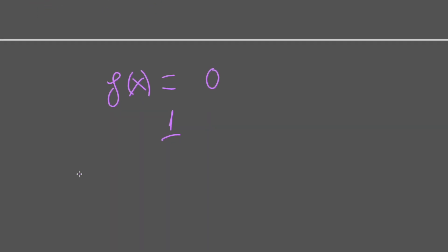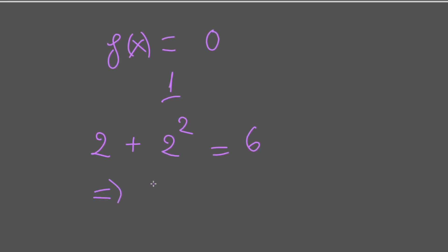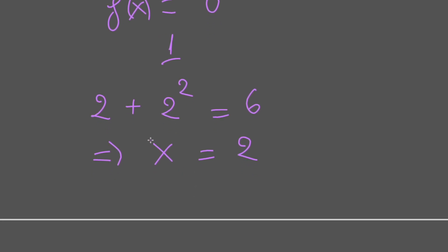And we can easily see that 2 plus 2 power of 2 equals 6. So it means x equals 2, because we prove that f(x) equals 0 has only one variable when x greater than 1. And so the variable of the equation is x equals 2.